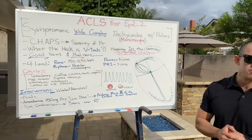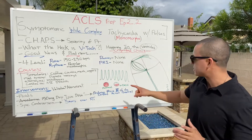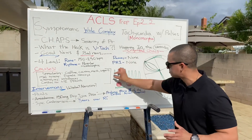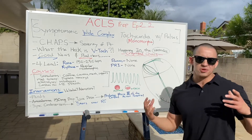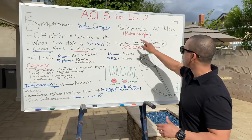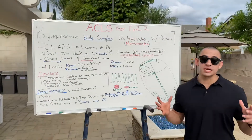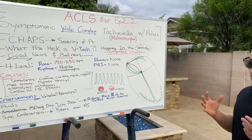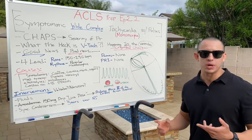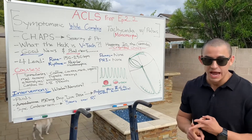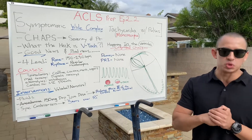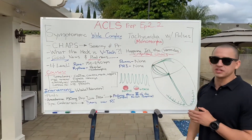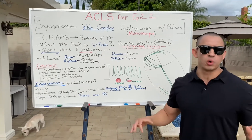Monomorphic might be a new word, but it simply means the rhythm is symmetrical — consistent voltage across the board. It's not small-large-small-large like polymorphic V-tach or Torsades de Pointes. This is monomorphic V-tach, symmetrical throughout. And with pulses is a critical statement — pulseless V-tach is a shockable rhythm where you defibrillate immediately. Today we're talking about V-tach with pulses in a cardiac arrest context.